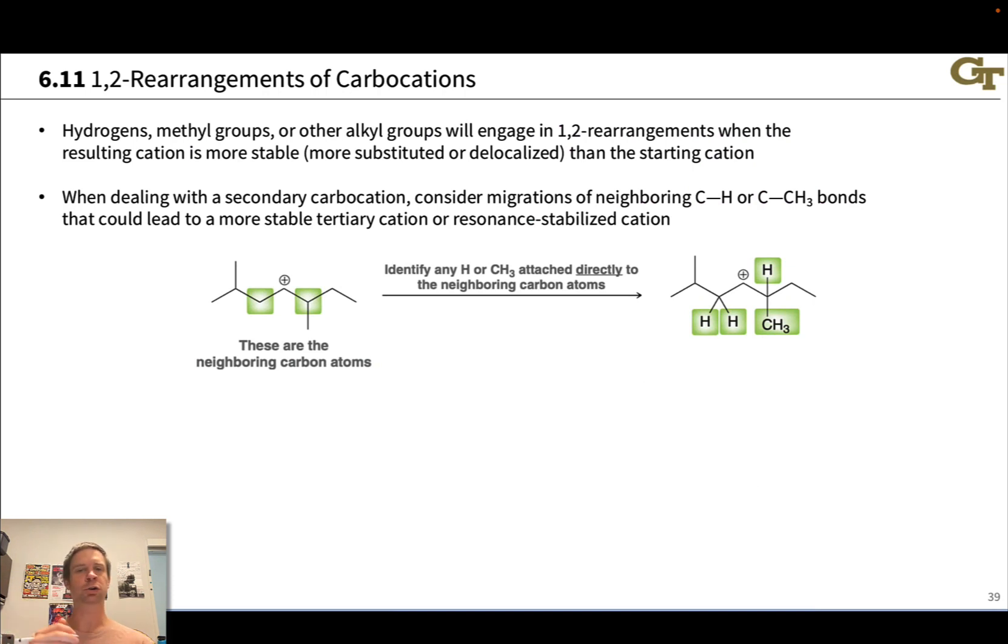To do this, we're going to look at the neighboring carbons and look for the potential for migration of a hydrogen or a methyl group or an alkyl group to create a more stable carbocation. So here, for example, we can notice that this carbon to the left of the cationic center has two hydrogens, and we can think about migrating one of those C-H bonds over to create a new cation through electron flow like this, just taking the C-H electrons and moving them over one carbon to the cationic center.